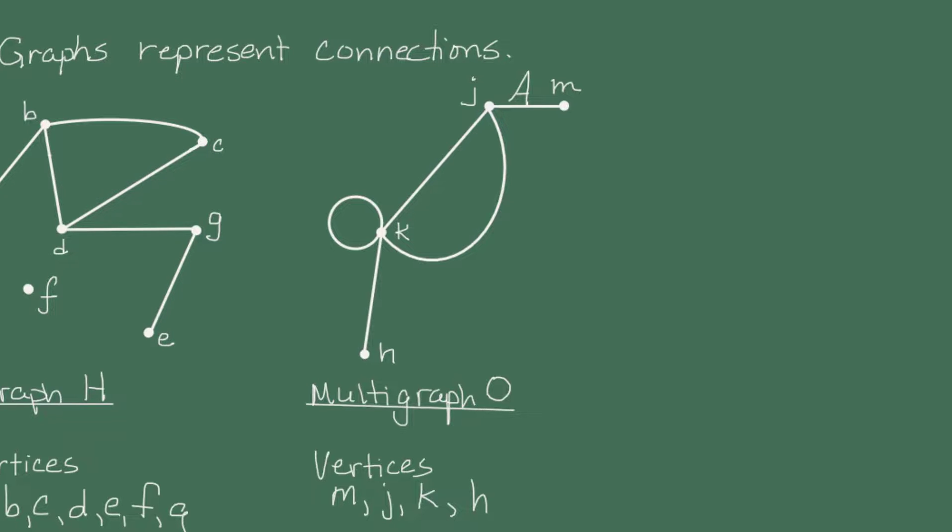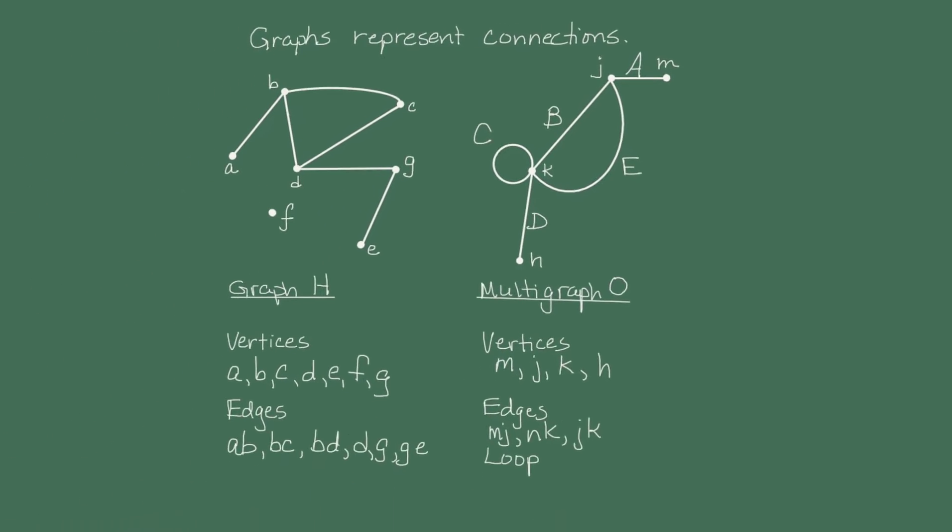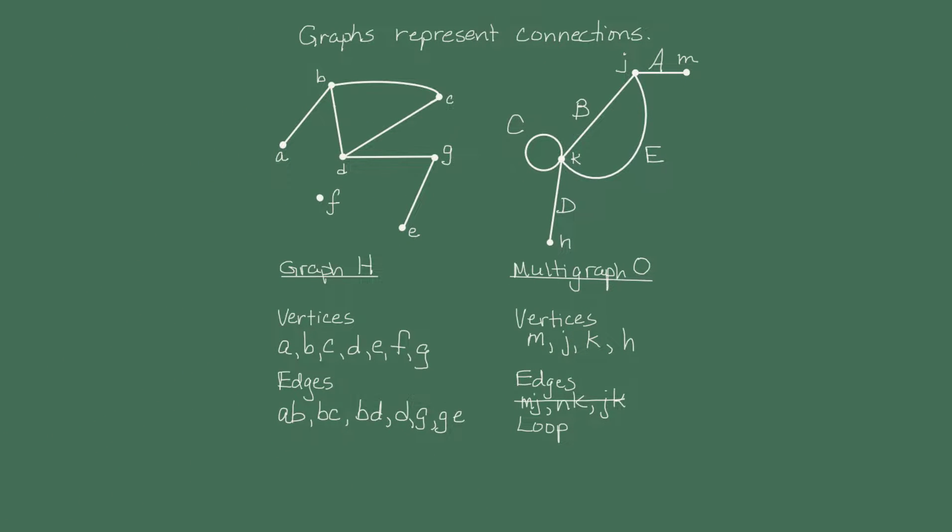Let's call this edge capital A, this one capital B, this one capital C, this one capital D, and this one capital E. In order to be clear, we might list the edges capital A, capital B, capital C, capital E, and capital D.